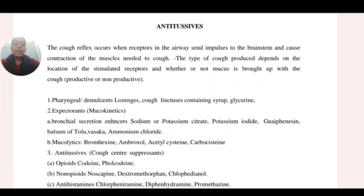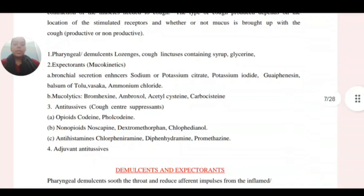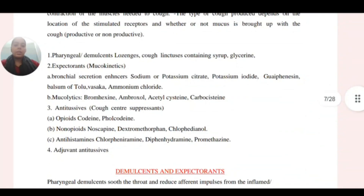Expectorants include bronchial secretion enhancers, sodium or potassium citrate, and balsam of tolu. The third category is mucolytics, which includes ambroxol and acetylcysteine.